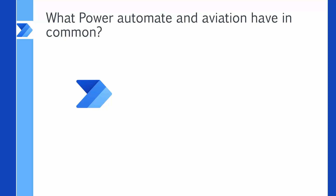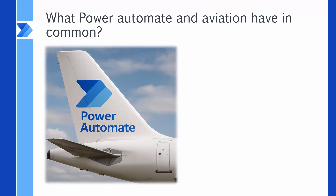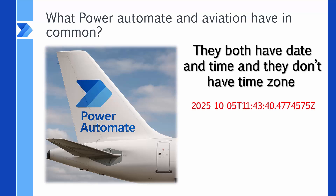Do you know what Power Automate and Aviation have in common? Well, they both have date and time, and they don't have time zone — simply because they all work with only one time zone, and that is called UTC time, or in aviation, they call it Zulu time. Airplanes fly all around the world, they need to communicate, and there is no room for time zone conversion. They all look at one clock, and that clock is the UTC time.